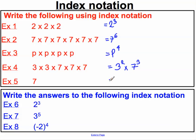Lastly, just to make a point clear: seven, or a number on its own — if we wanted to write that as index notation, that's actually seven to the power of one. That's mathematical convention. Seven to the power of one is equal to the number seven.